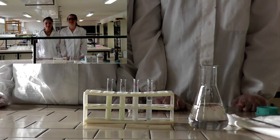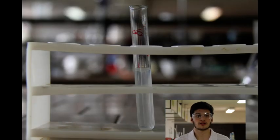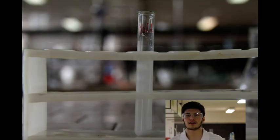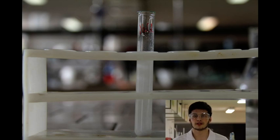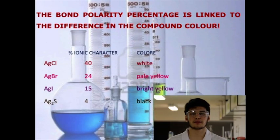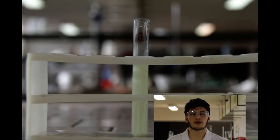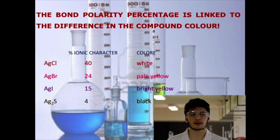Let's ask again our personal scientist. Calculating the difference between the electronegativity of silver with each halogen, we can observe that passing from fluorine to iodine, the bond changes from ionic to polar covalent. As the polarity of the bond increases, its solubility in water increases as well. For this reason silver fluoride doesn't precipitate. The decrease in the ionic percentage of the bond is also linked to the compound's color, because the electron is more or less free for giving the electronic transition responsible for the color. These compounds are used in analytical chemistry for testing halides.